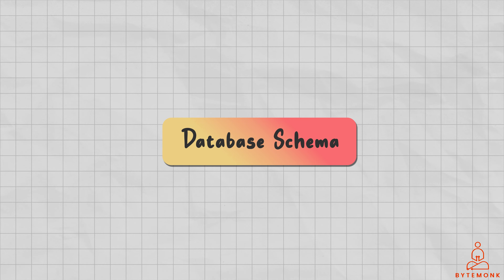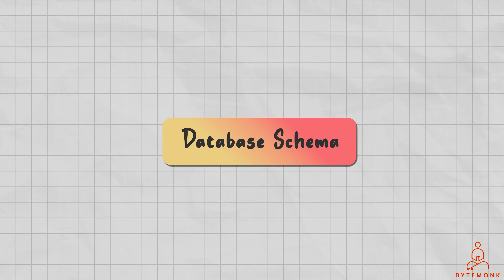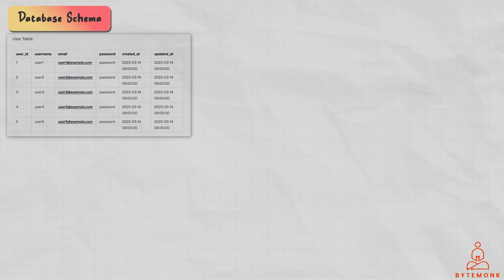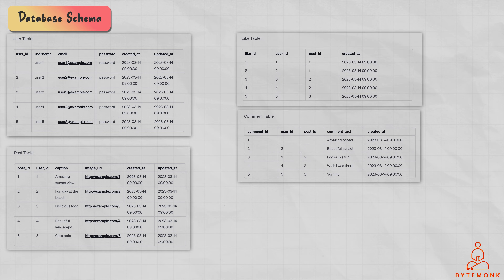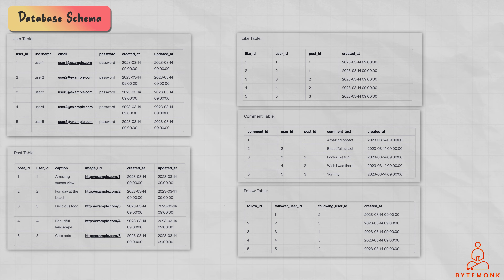In my YouTube system design video, I mainly focused on video upload, search, and streaming. In Instagram design, apart from image upload, we are also looking into the relationships between users such as who is following whom, and likes and comments on the post. So we should be talking about the database schema to ensure it suits our needs and use cases. Please let me know in the comments if you can think of a better schema. For the database, we have a user table, a post table, a like table, a comments table, and a follow table.